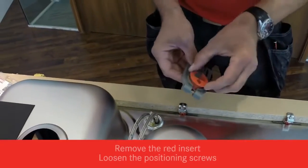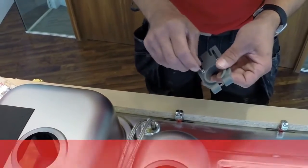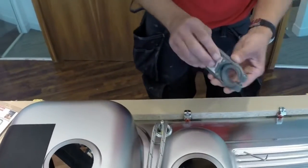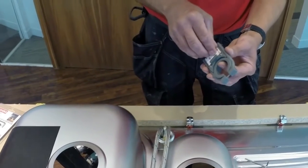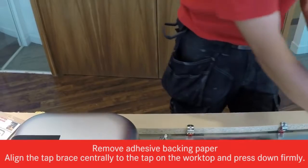The first thing is to take the red collar out, and if these screws are tight, loosen these adjustable screws. The small flange on the back aligns with the cutout in the worktop. Take off the adhesive backing pad.